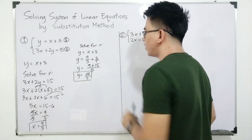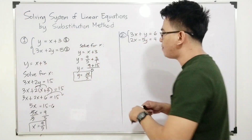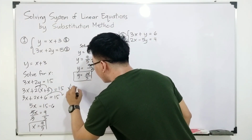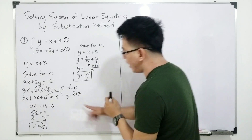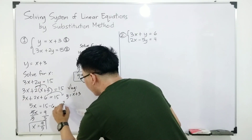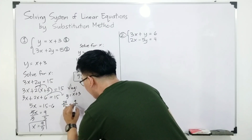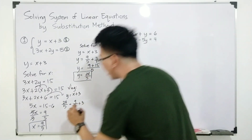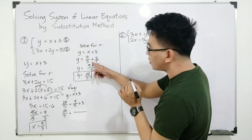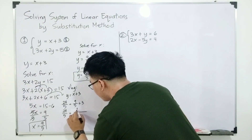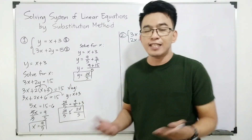Now, if you want to check your answer, substitute the values into the given equations. For equation number one: y = x + 3 becomes 24/5 = 9/5 + 3. Using the LCD, the right side is also 24/5. As you can see, they are equal, so we have satisfied the first equation.